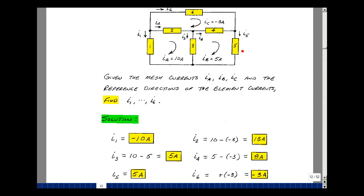Current i5 is in this direction. That actually is the same as i_b, so that's 5 amps. And lastly, current 6, just flowing in this individual element, and that just agrees with i_c. And the value of i6 is equal to minus 3 amps.